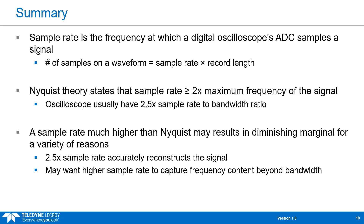One reason being that if you accurately use the rule of thumbs to select the oscilloscope bandwidth and sample rate, the 2.5x sample rate to bandwidth ratio will accurately reconstruct the signal, and anything more than that is not really getting more information about the signal. You may want a higher sample rate to capture frequency content beyond the bandwidth of the oscilloscope, if that frequency content in your signal does exist.